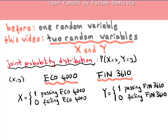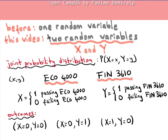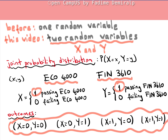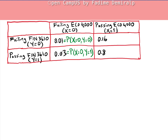We are interested in four mutually exclusive possible outcomes for the pair (X, Y): failing both courses, failing ECO4000 and passing Finance 3610, passing ECO4000 and failing Finance 3610, and lastly passing both. For these four outcomes, assume we are given the following joint probability distribution. There is a 1% chance a student fails both courses, a 3% probability to fail ECO4000 and pass Finance 3610, a 16% chance the student passes ECO4000 and fails Finance 3610, and an 80% chance of passing both.